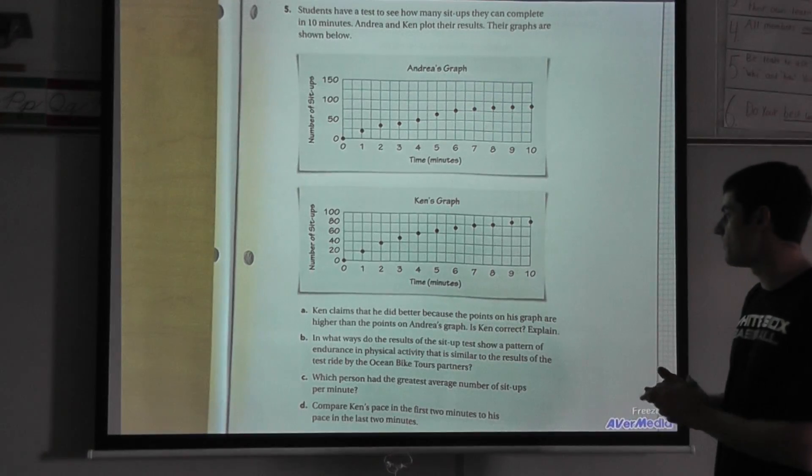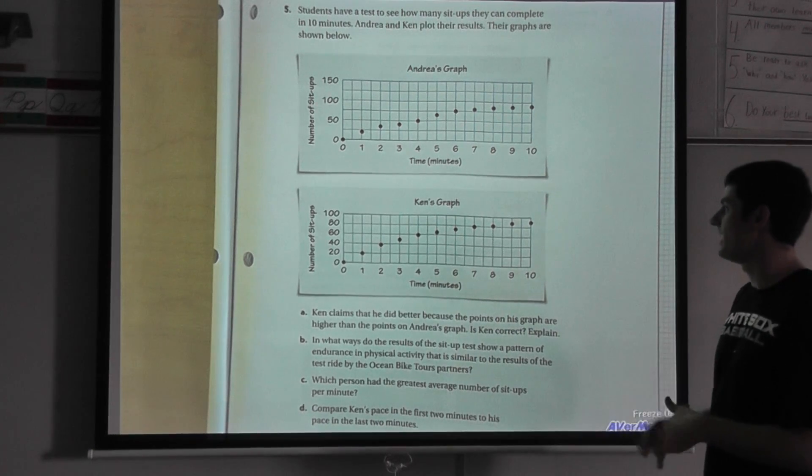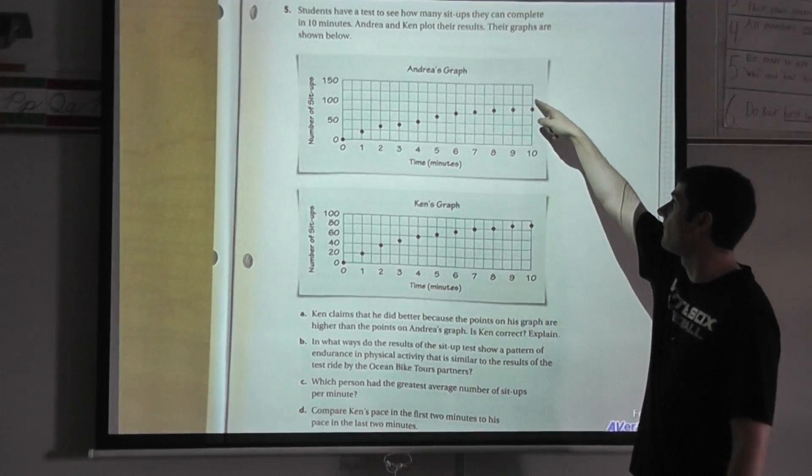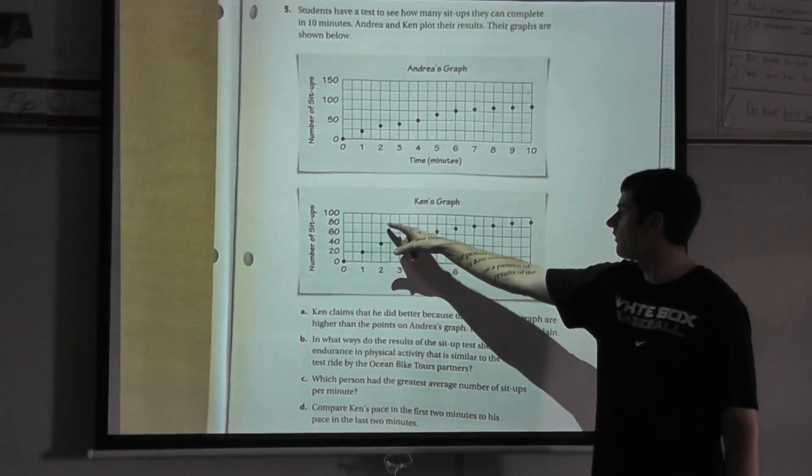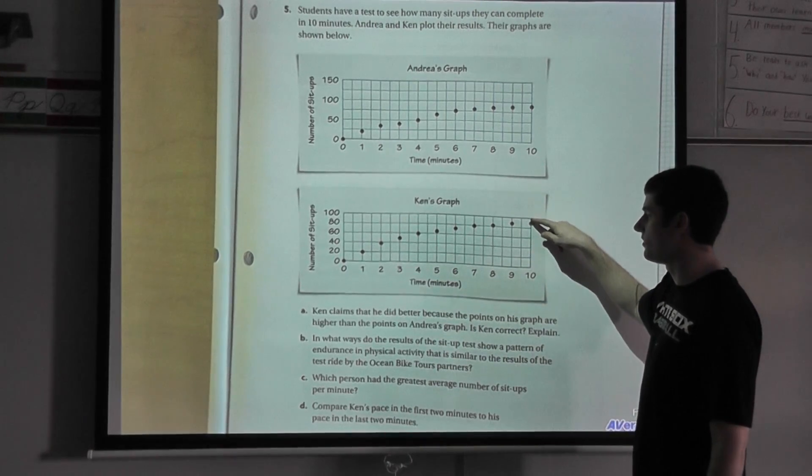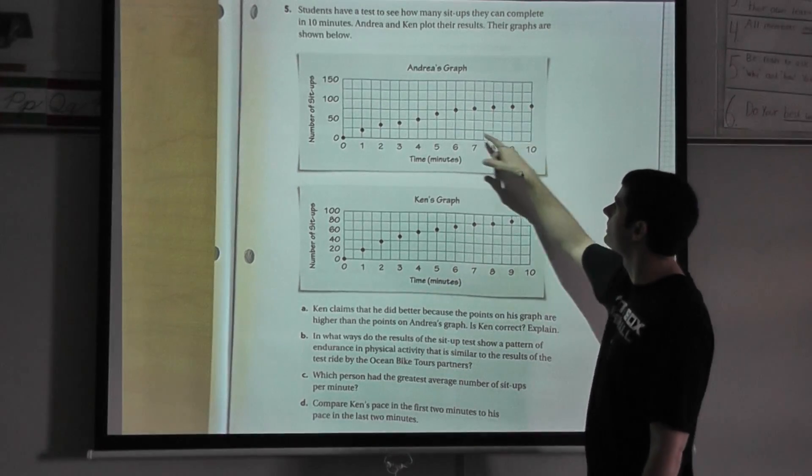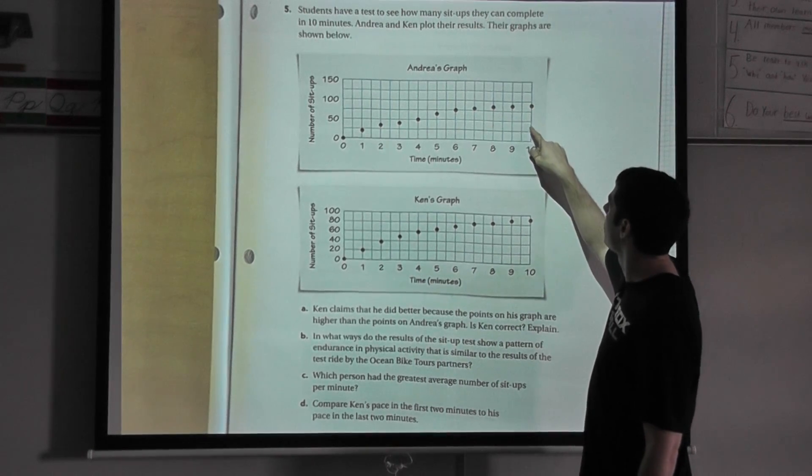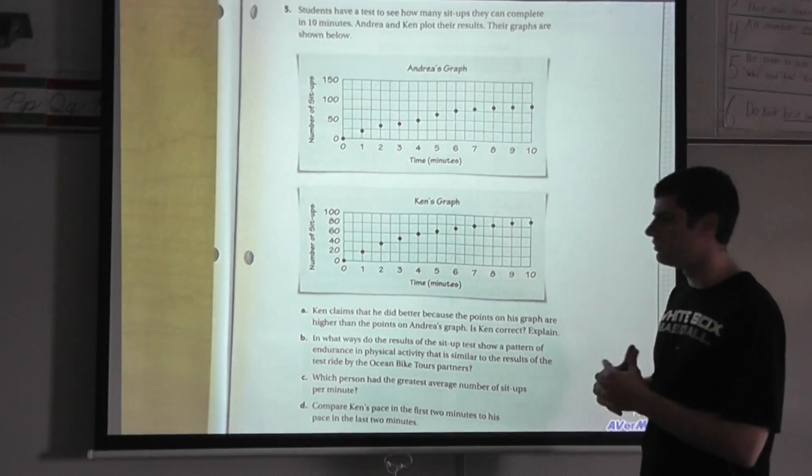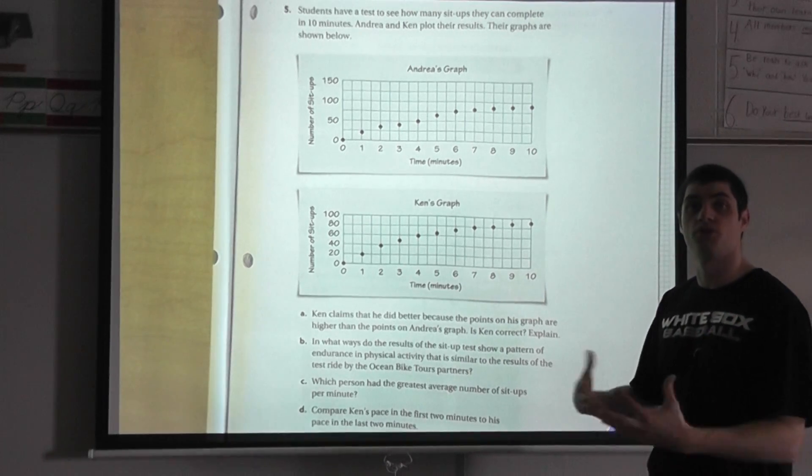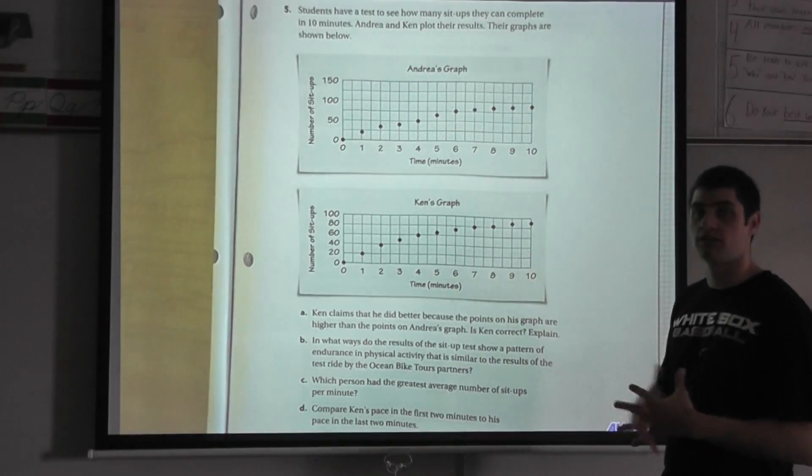Ken claims that he did a better job because the points on his graph are higher than the points on Andrea's graph. Is Ken correct? Explain. So basically, Ken's saying that he did better because his points are higher on his graph than Andrea's graph. Well, is this really correct? Let's take a look. Ken's graph, this is about 80. I'd say this is about halfway between 80 and 100. I'd say Ken probably did 90 sit-ups. Let me look at Andrea's graph. In 10 minutes, I see that this line's 100, this line would be 50, so this would be 75. It's close to 100. I'd say it looks pretty much like 90. Looking at these two graphs, I would say that Ken is not correct because they both did 90 sit-ups. It doesn't matter that his dots are higher in the graph. I have to look at my intervals on the side to figure that out.